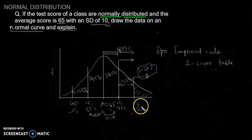Similarly, 2.27% of students scored below 45%. This is the bell-shaped curve when the mean is 65 and the standard deviation is 10.